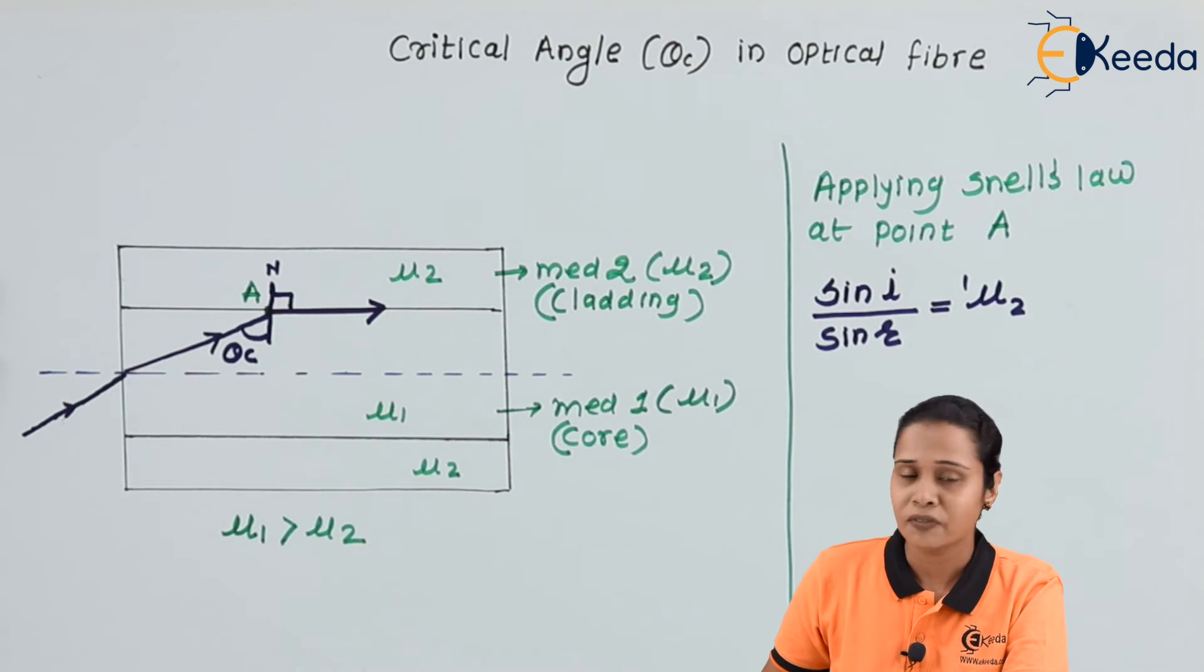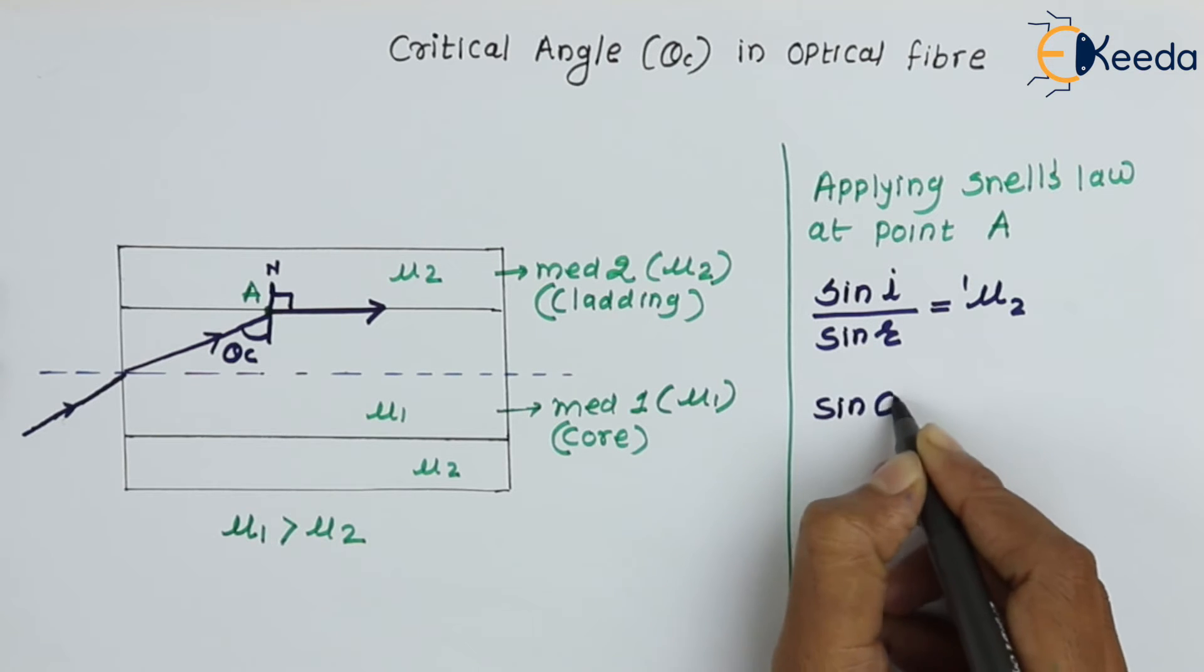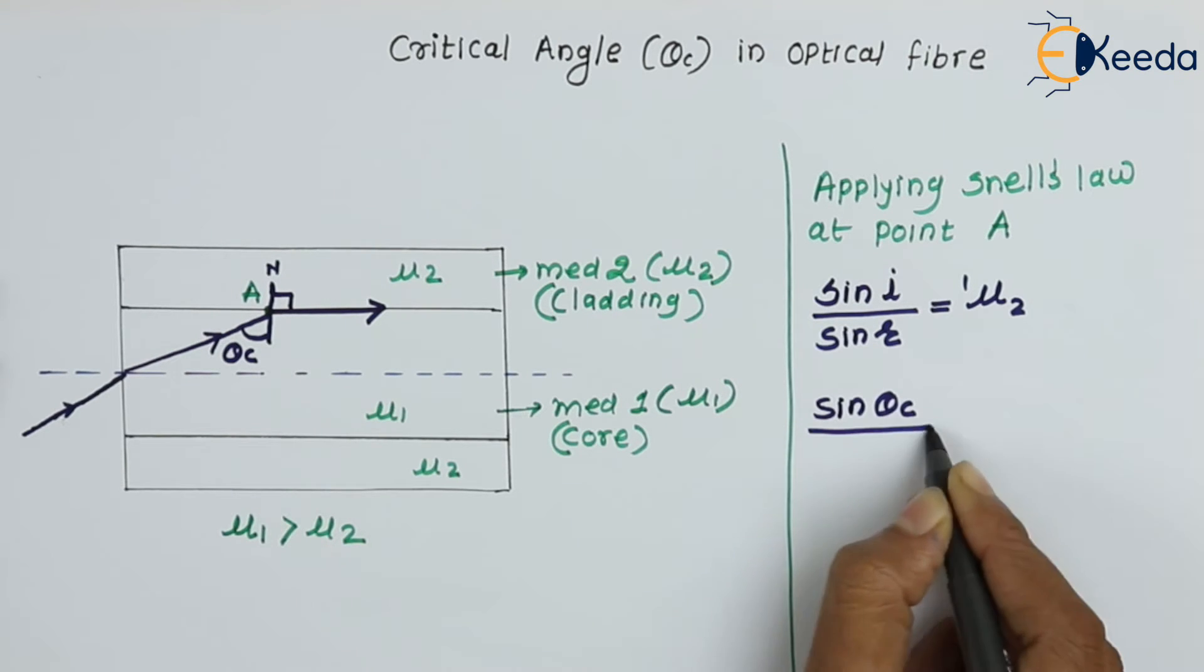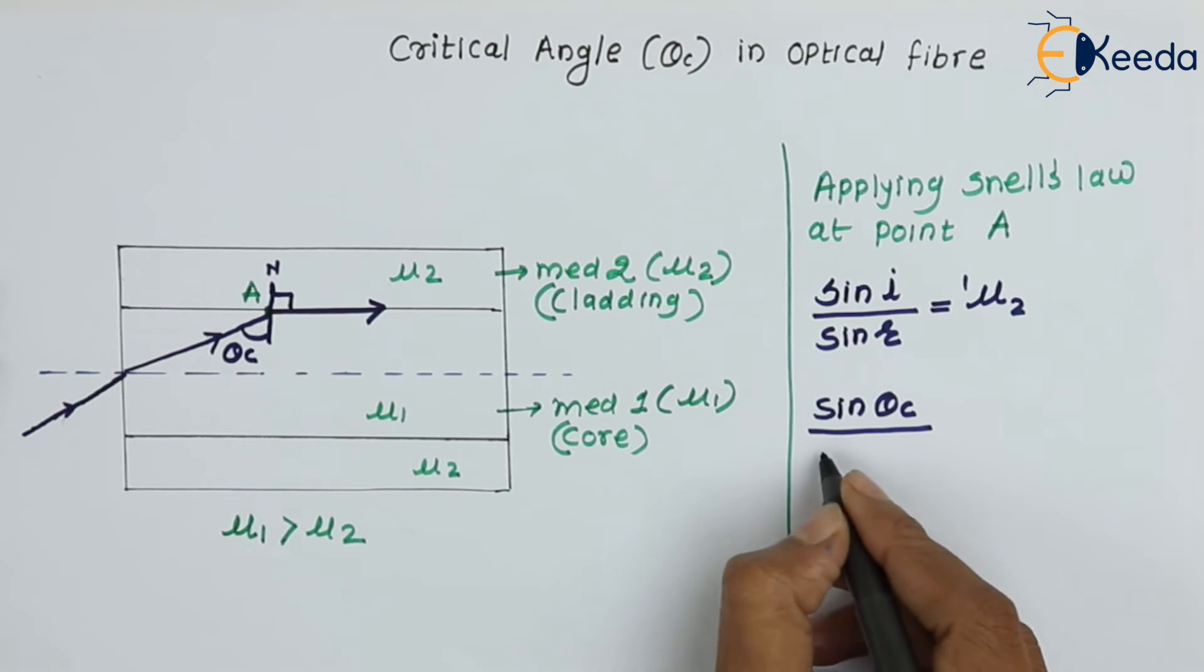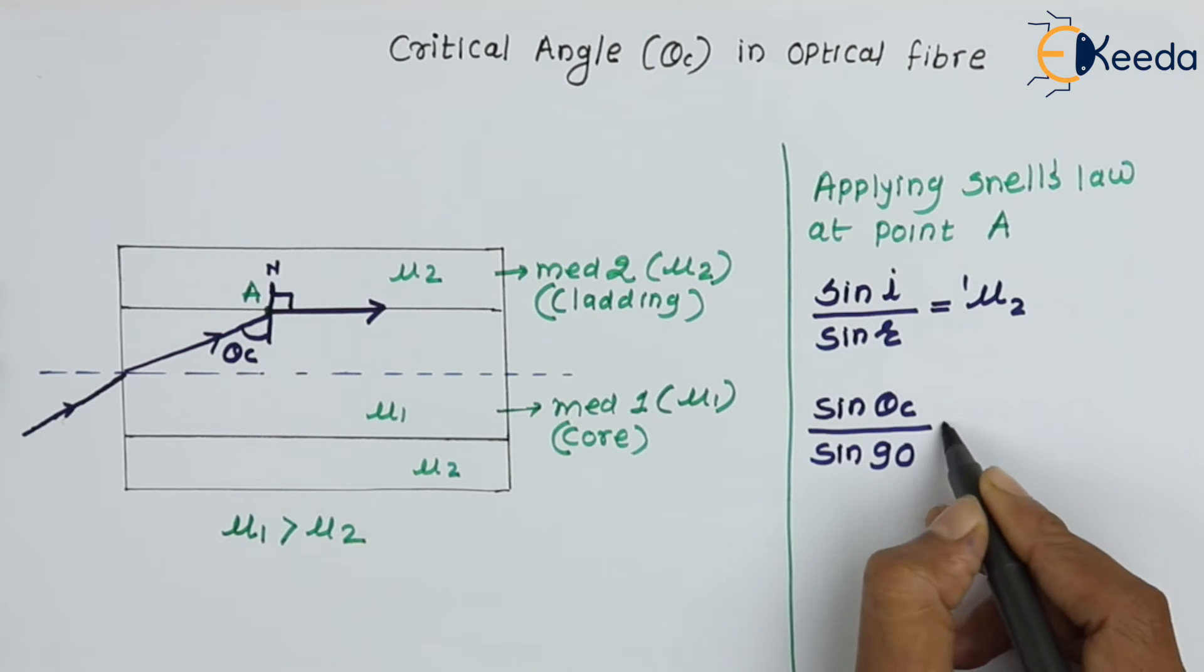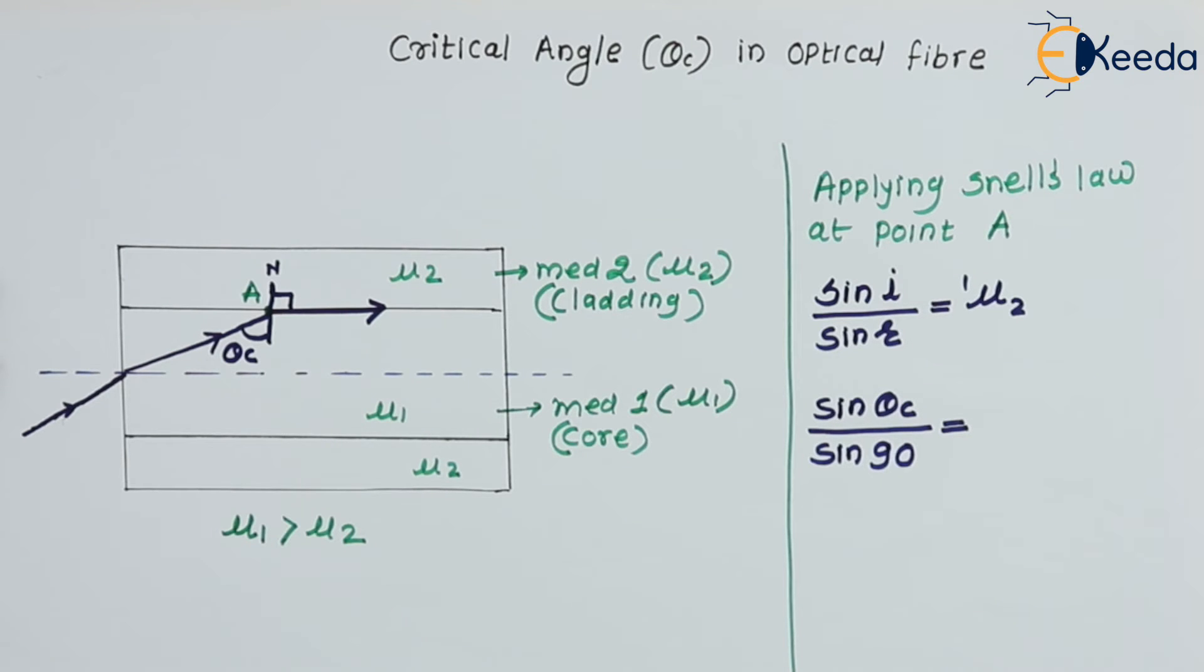So here our angle of incidence is the critical angle, so we can write here sine of θc. And our angle of refraction is 90, so we will write here sine of 90, which is equal to μ₂,₁, which equals μ₂ by μ₁.